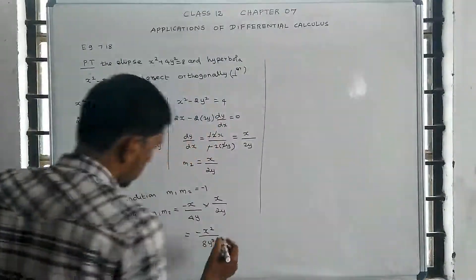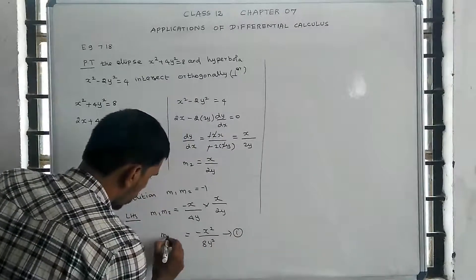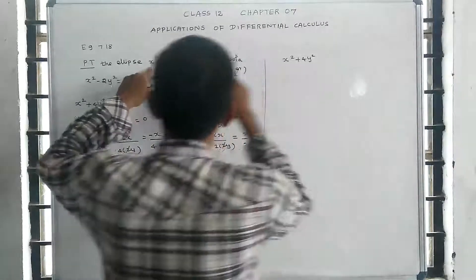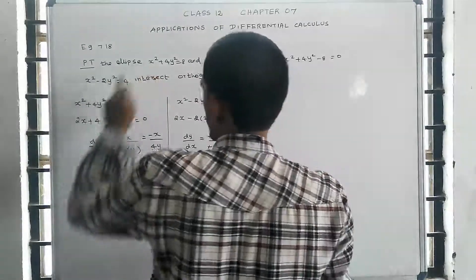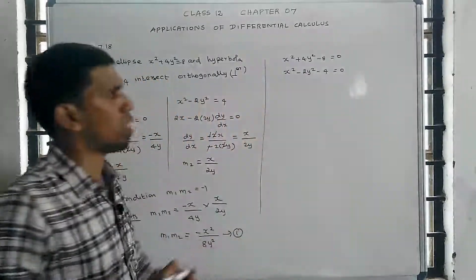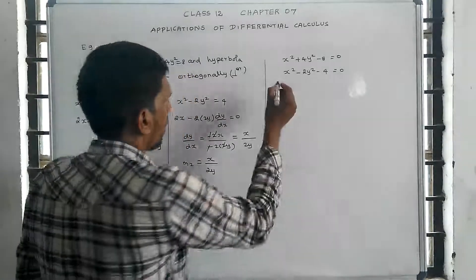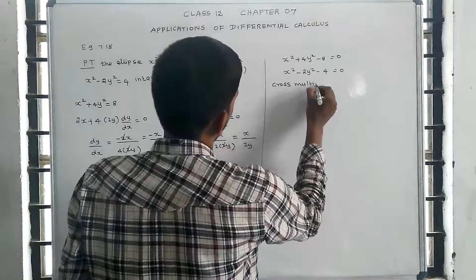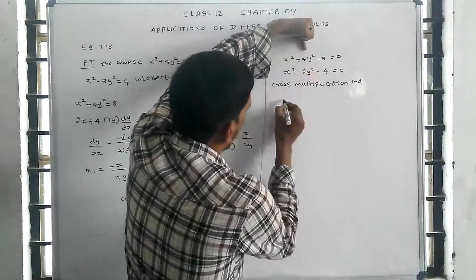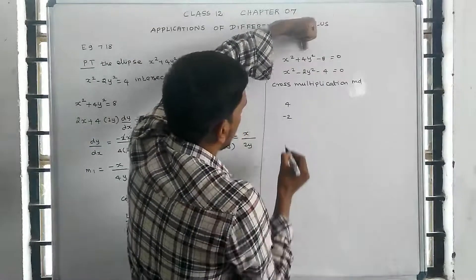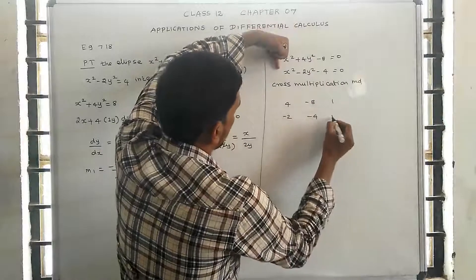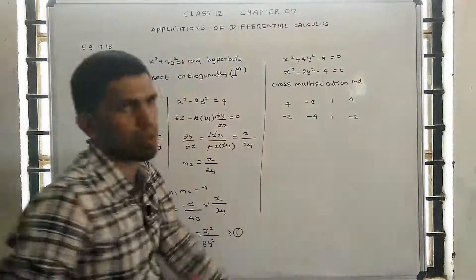To find the point of intersection, we solve the two equations simultaneously using cross multiplication. The first equation is x squared plus 4y squared minus 8 equal to 0, and the second equation is x squared minus 2y squared minus 4 equal to 0. Using cross multiplication: the coefficients give us the second equation constants as minus 8 and minus 4, with coefficients 1 and 1 for x squared, and 4 and minus 2 for y squared.